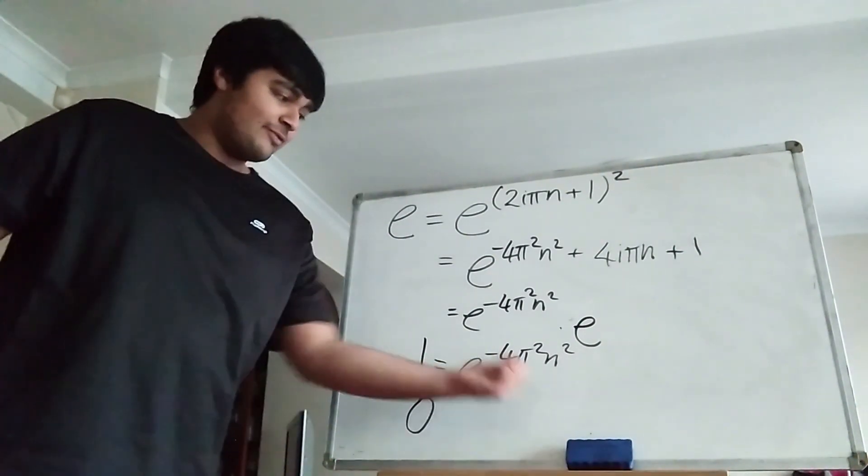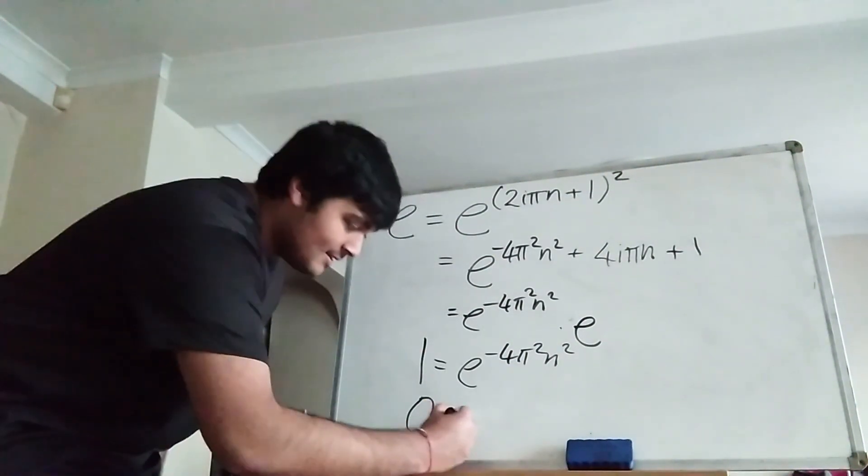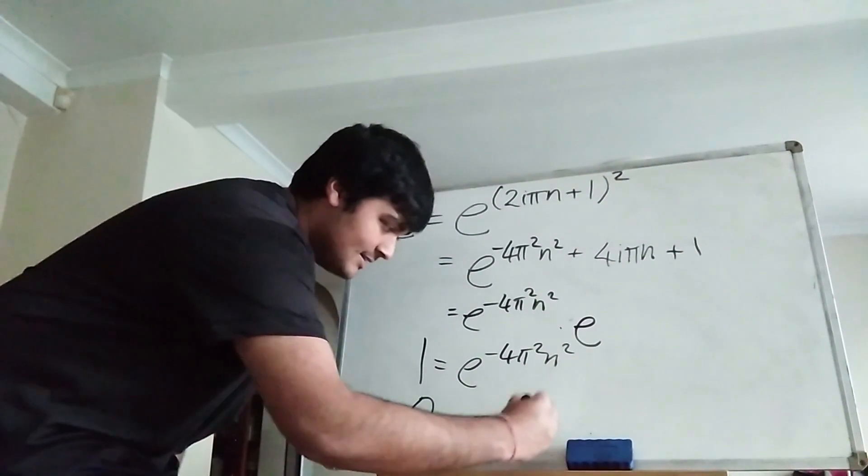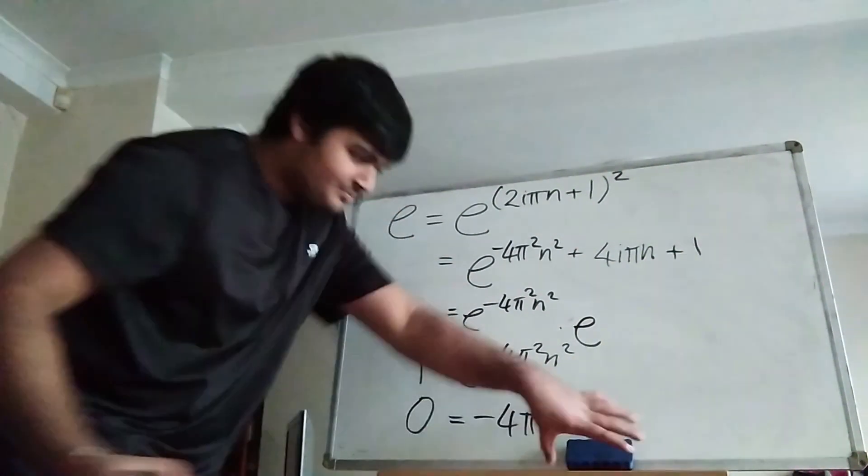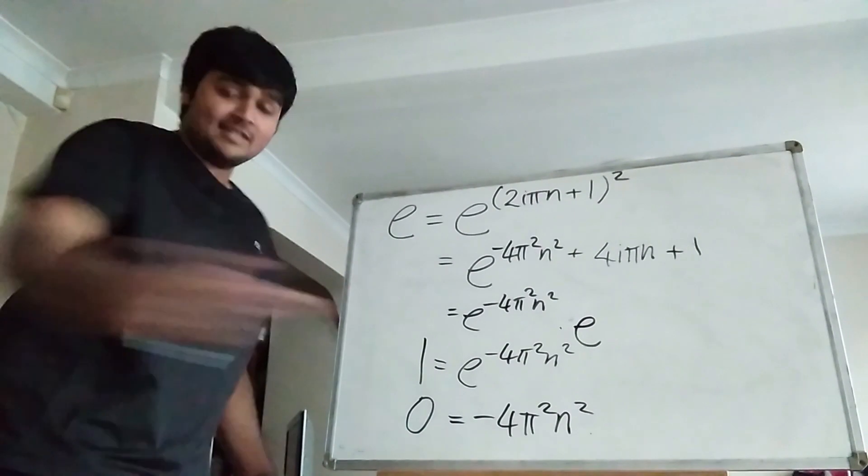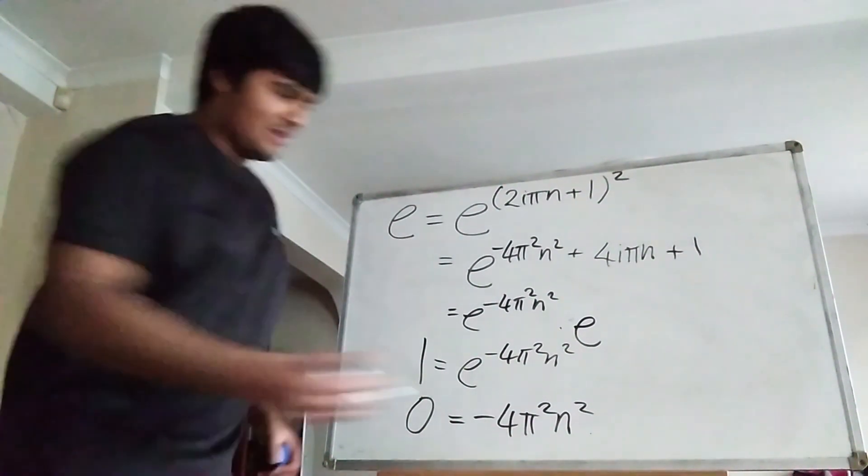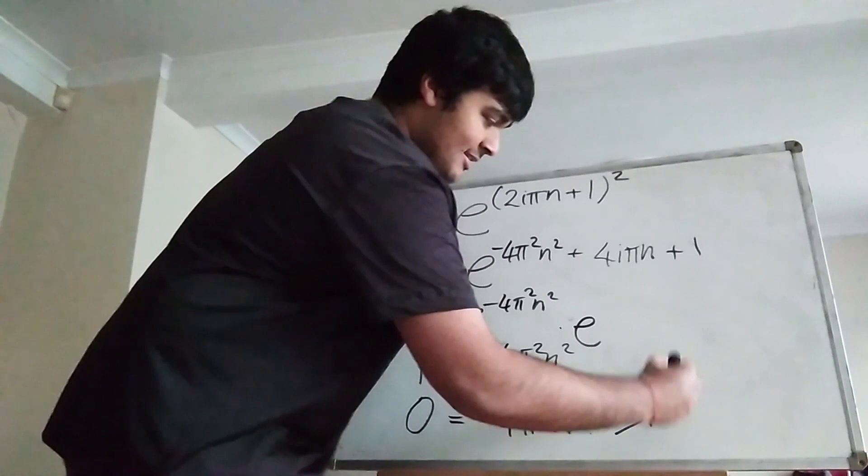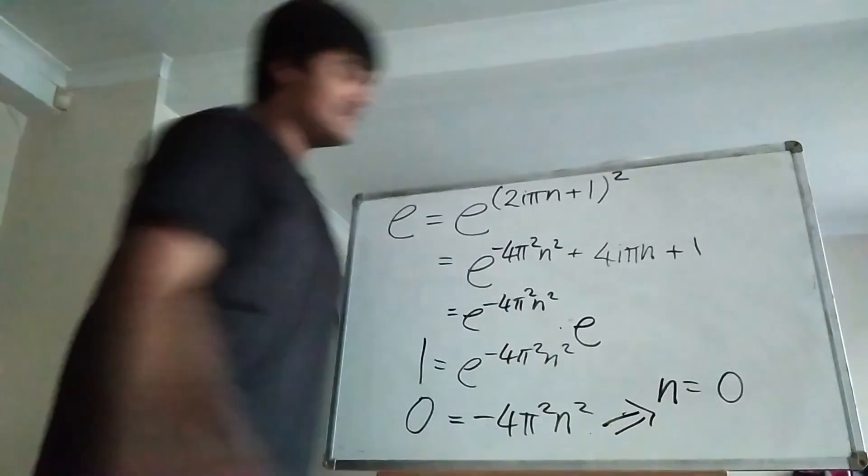And on the right-hand side, we take the natural log of this, so we just bring this exponent down. So it's minus 4 pi squared n squared. But then, of course, we can divide both sides by minus 4 pi squared, and then take the square root and conclude that n must equal 0.